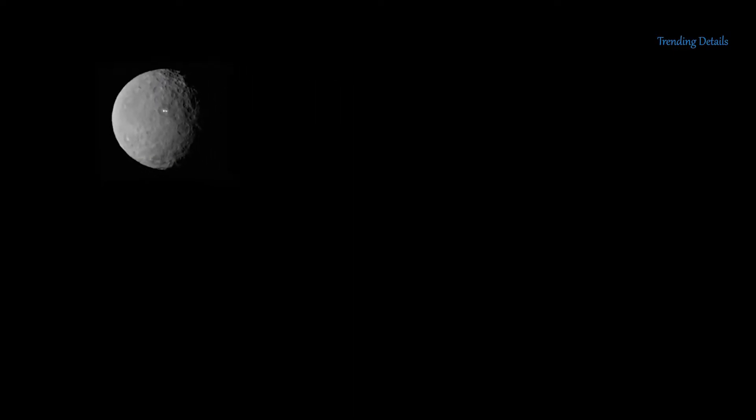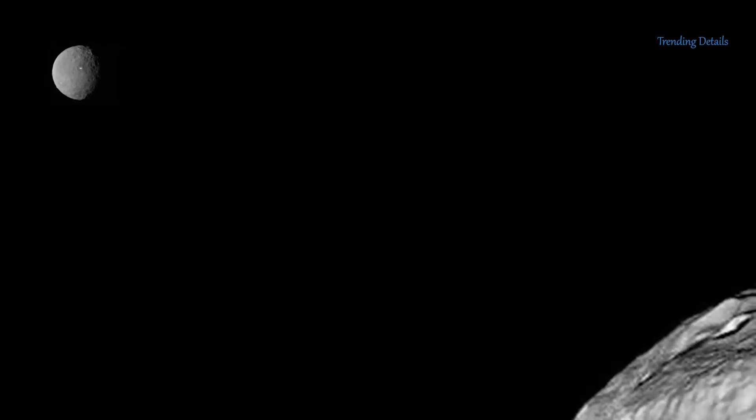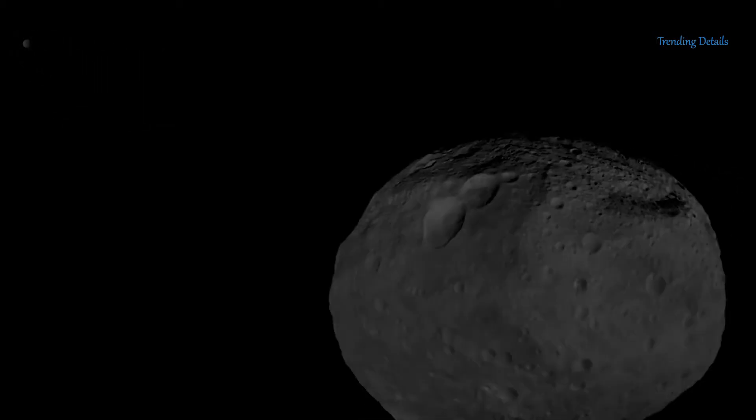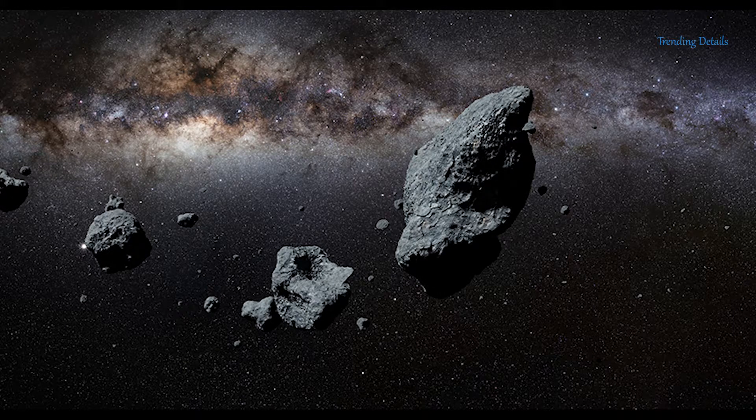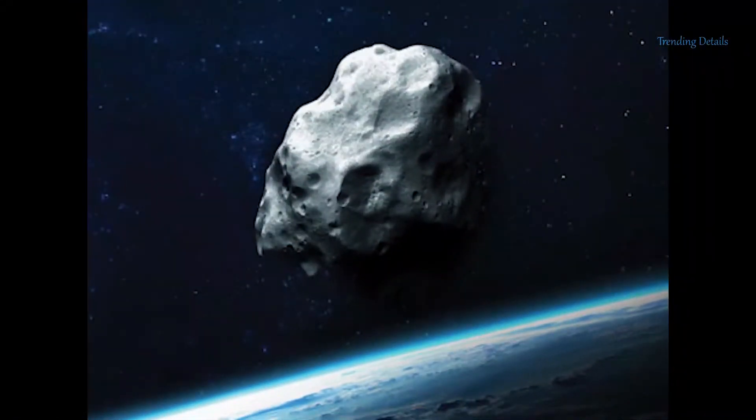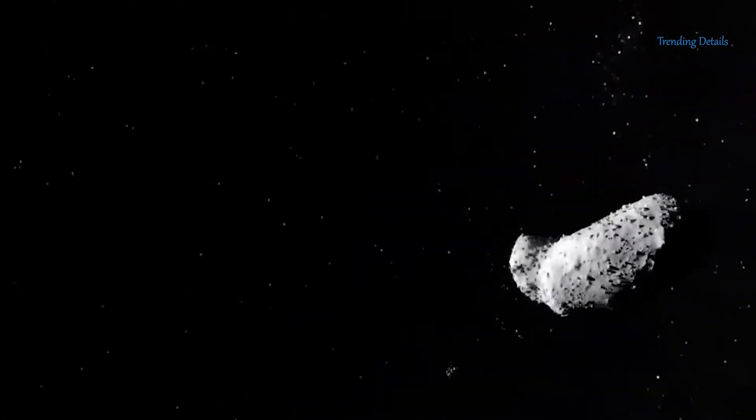Although that may seem like a sizable distance, it is enough to make NASA sit up and notice and classify it as potentially hazardous. The space agency said potentially hazardous asteroids, PHAs, are currently defined based on parameters that measure the asteroid's potential to make threatening close approaches to the Earth.